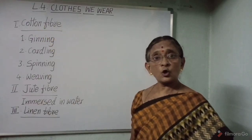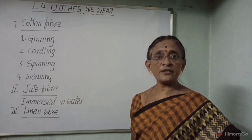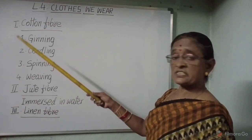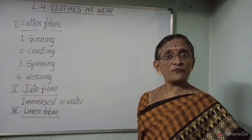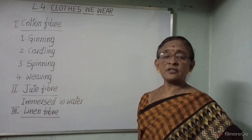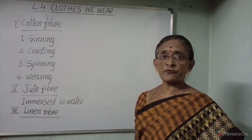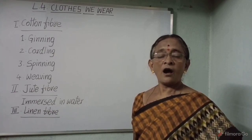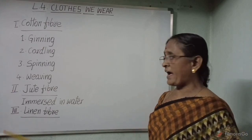Cotton fiber is obtained from the fruit of the cotton plant. The fiber is separated from the seed by hand, then the seed and cotton are separated. The processes used are ginning, carding, spinning, and weaving. Ginning is the removal of cotton fibers from the seed. Carding is separating the cotton fibers stuck together and cleaning them. Spinning is drawing yarn from the cotton wool, done on a spinning wheel, charkha, or machines. Weaving is the making of a fabric or cloth.